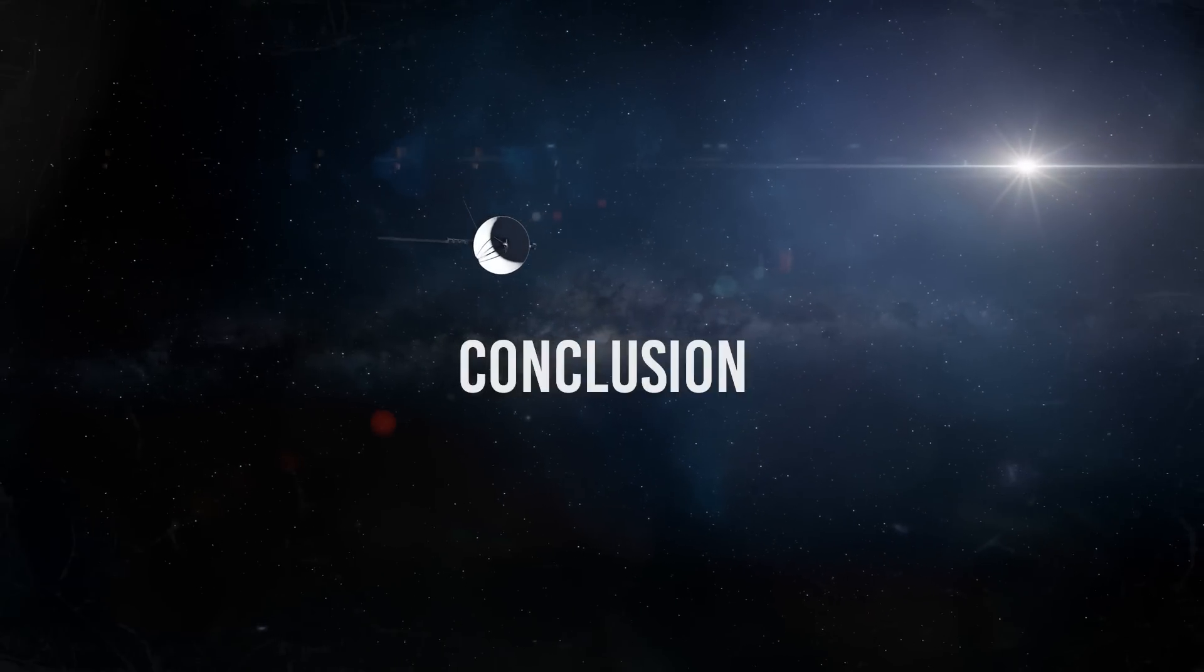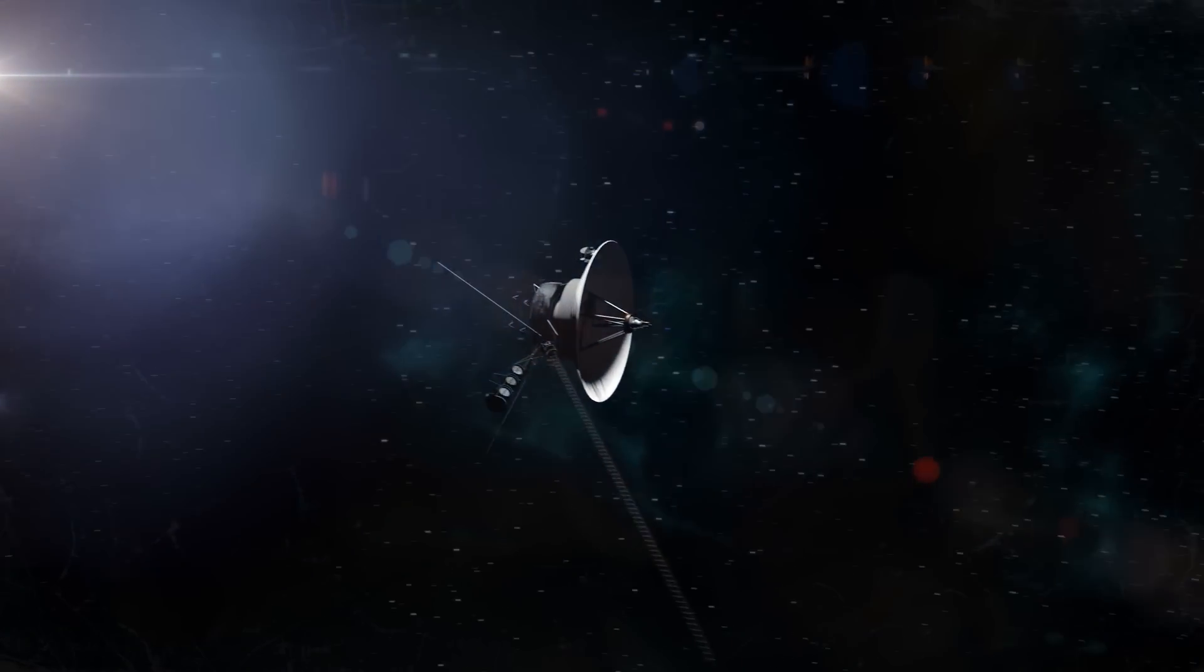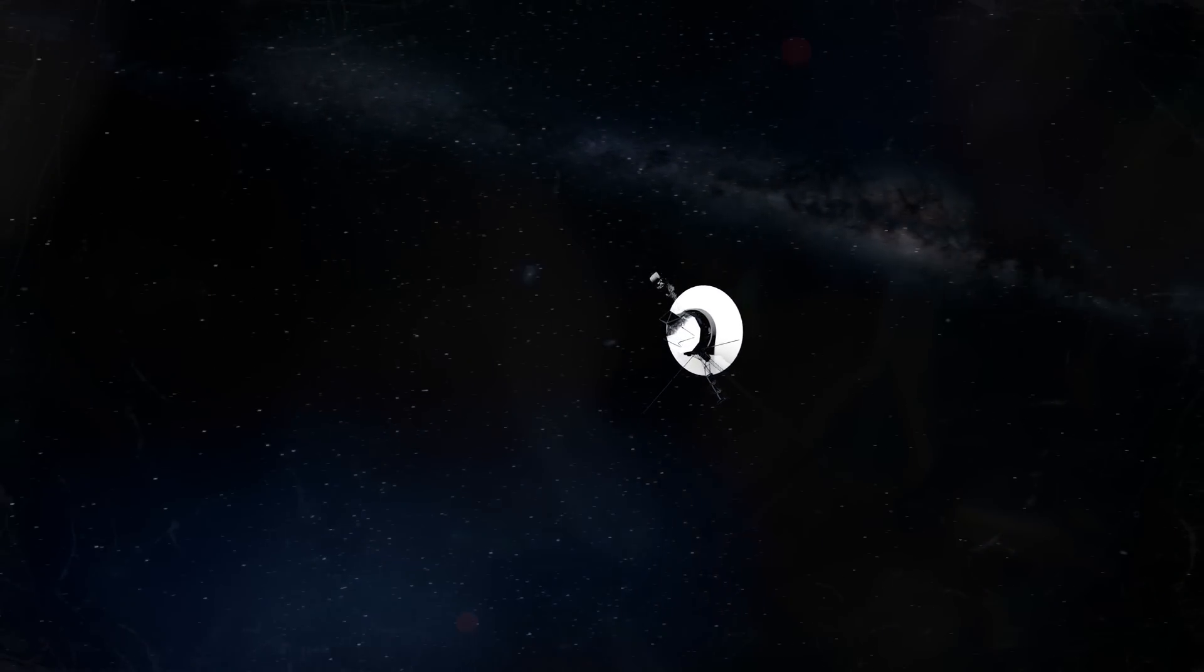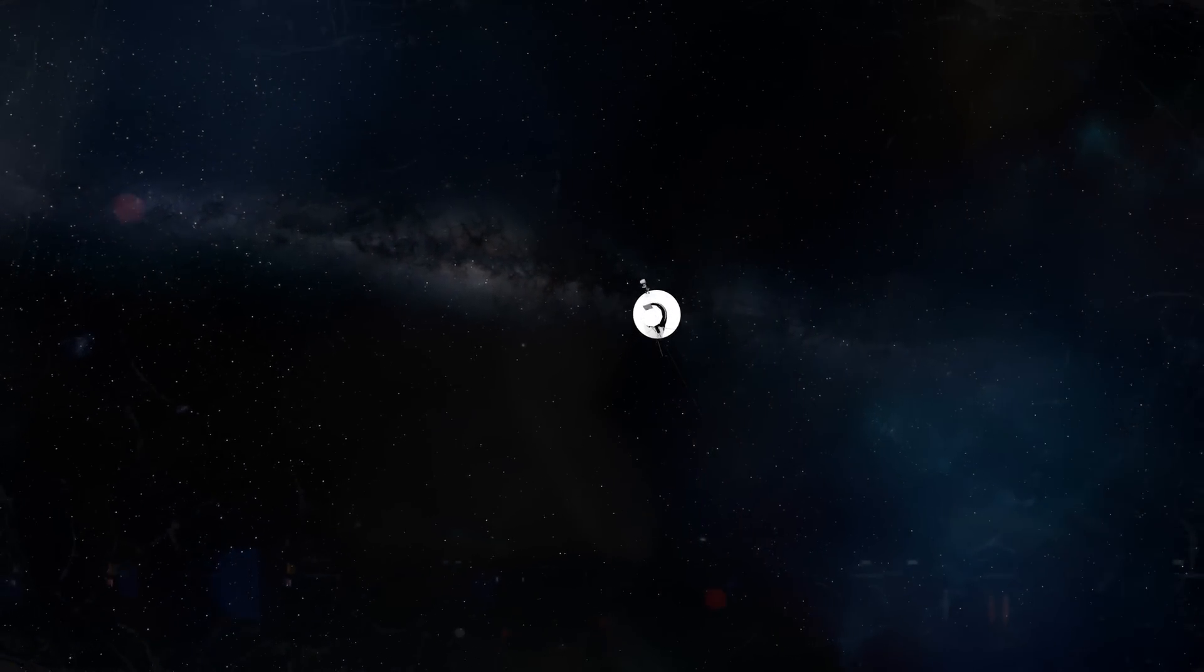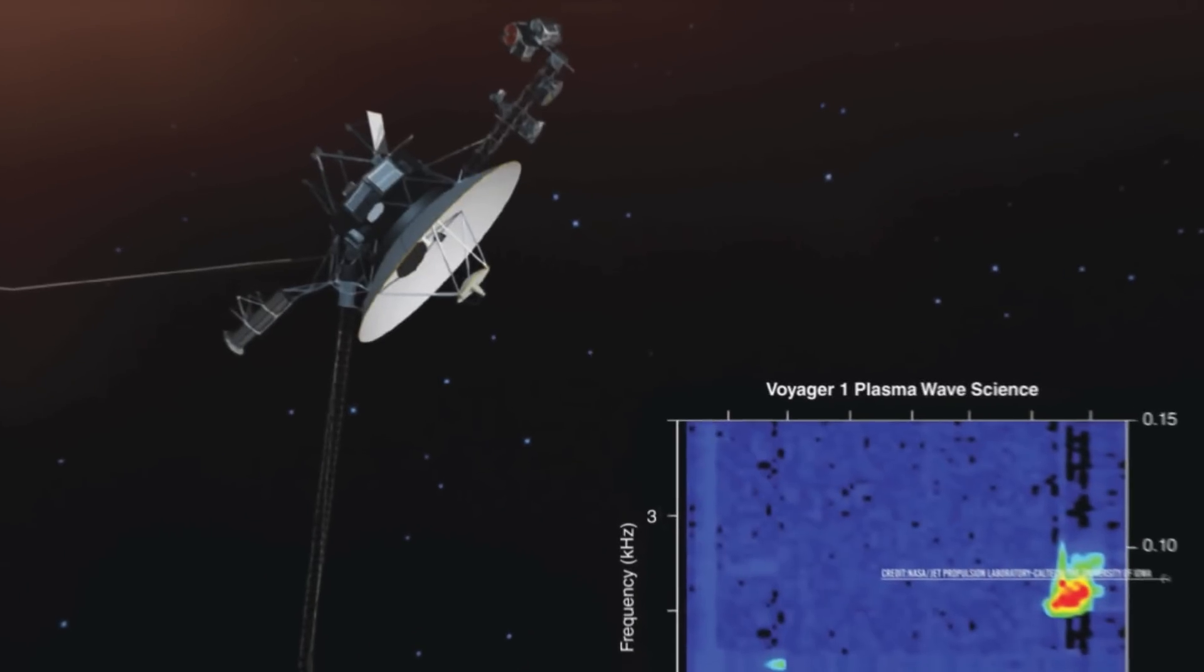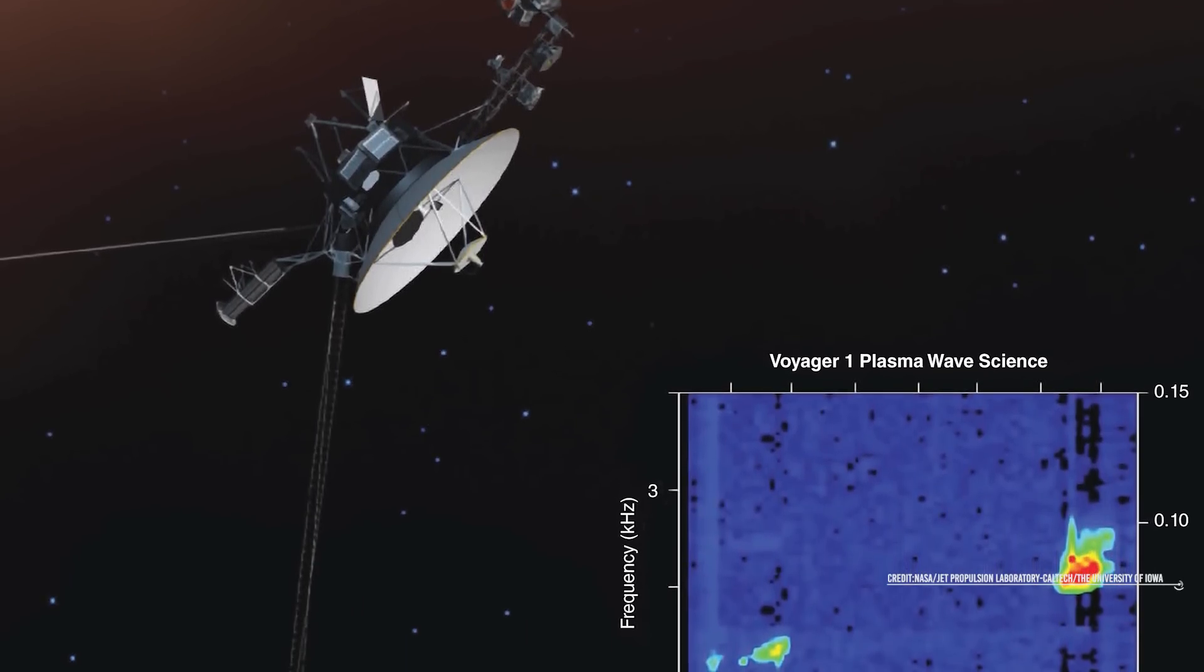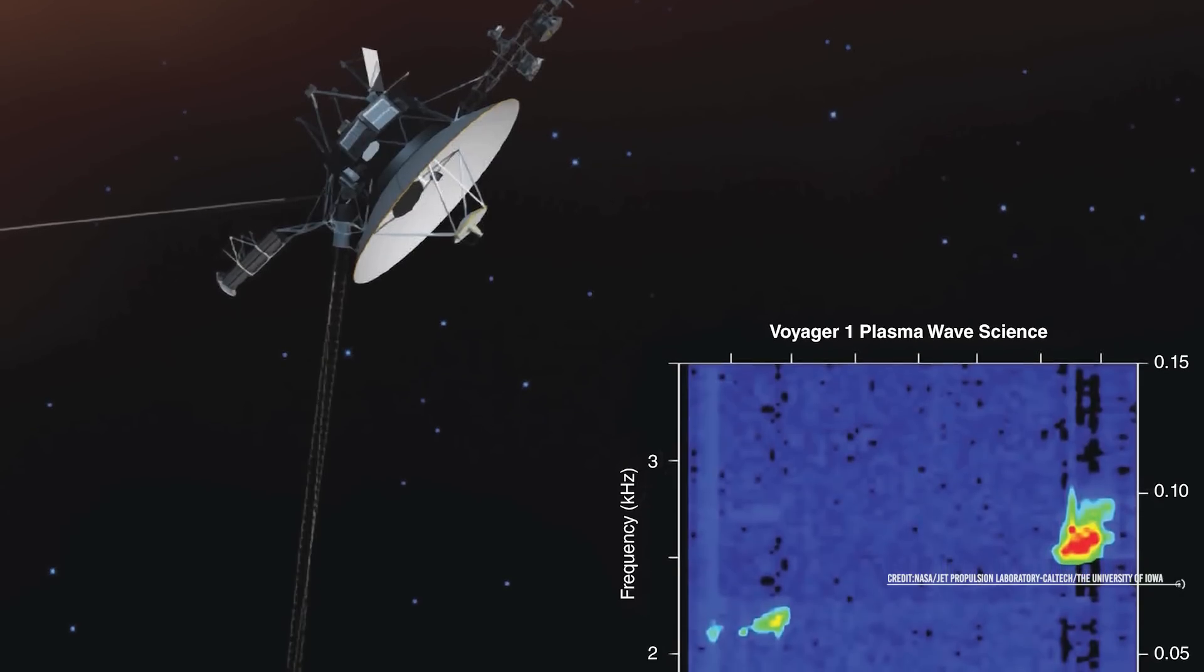So in conclusion, the Voyager space exploration probes have traveled hundreds of millions of kilometers in space since they were launched almost 50 years ago. They are the objects created by humanity that have gone the furthest, and thanks to them, we know the interstellar medium better. Currently, both spacecraft have exceeded the limits of the heliopause, so it is correct to say that they are outside the limits of the solar system.